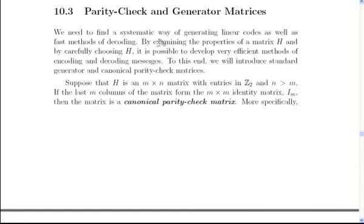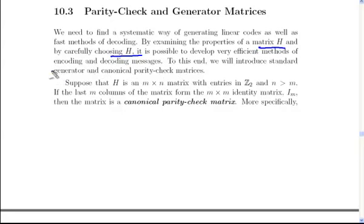We want to systematize some of these things we've been talking about. Remember, if we have a matrix H, we can define a linear code, and we can choose H in such a way that makes it easy to encode and decode messages. The way we do this is put H in standard form, and these are called standard generator and canonical parity check matrices.